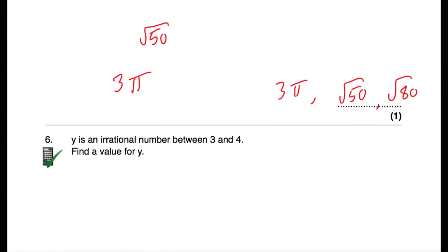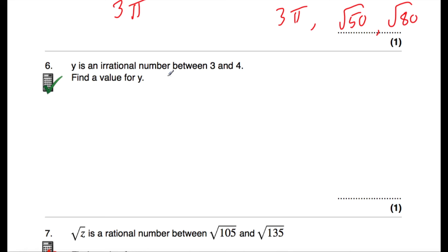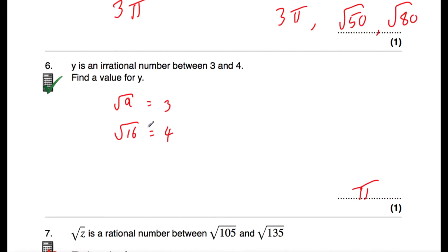Question number six says: Y is an irrational number between three and four. Find a value for Y. The one that's jumping to mind is pi — 3.14159 — it's irrational and between three and four. Alternatively, the square root of nine is three and the square root of 16 is four. So the square root of 10, 11, 12, 13, 14, or 15 would all be between three and four and irrational. For instance, the square root of 11 or the square root of 14.